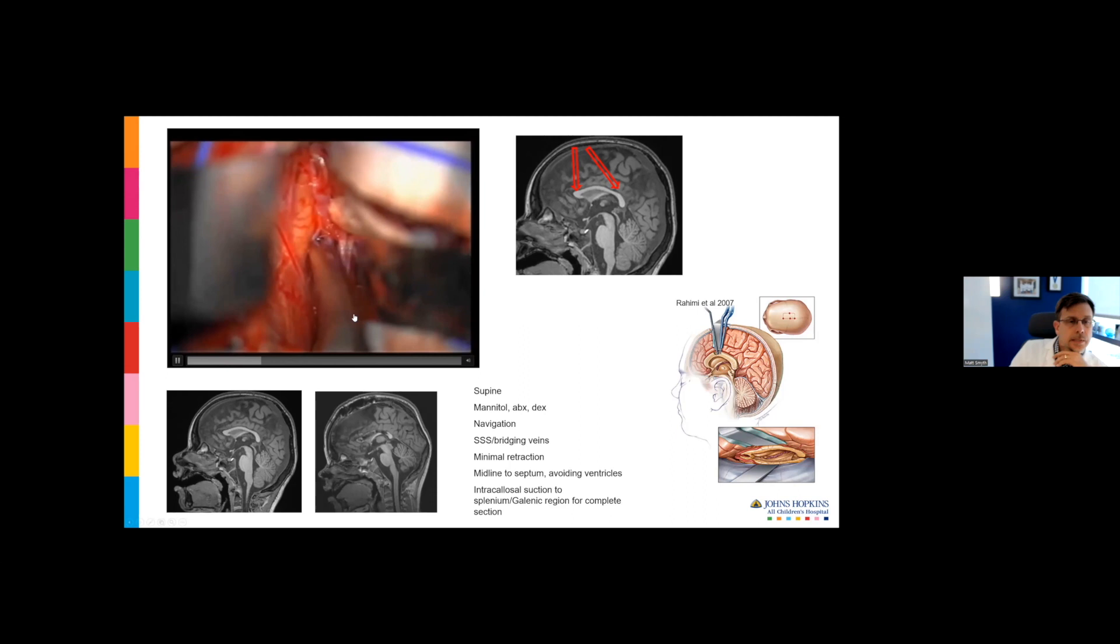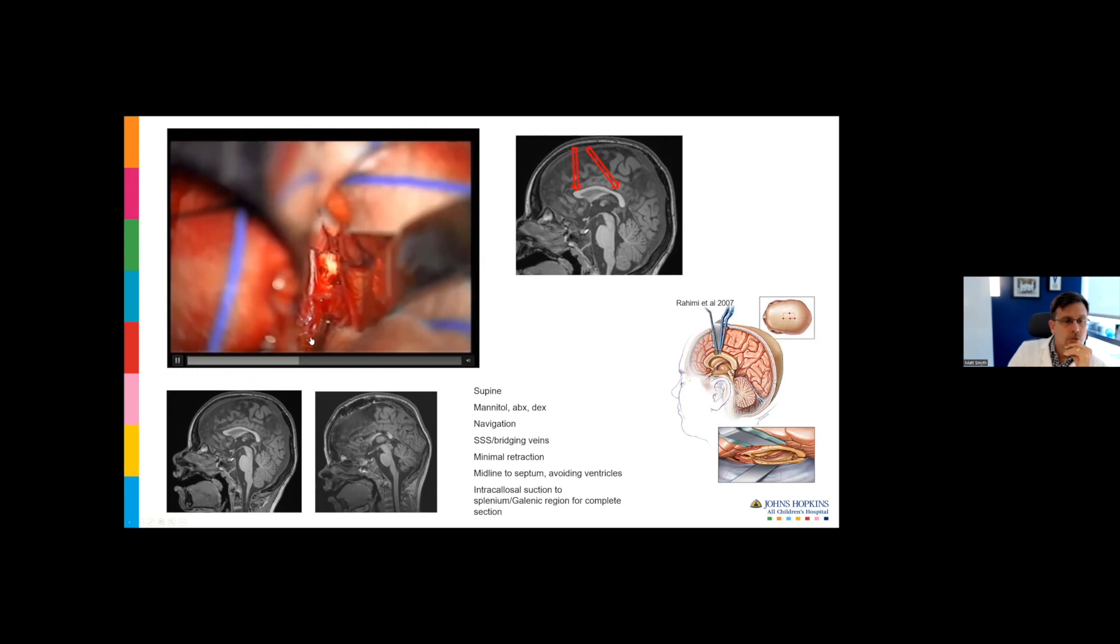Often the cinguli are stuck together, and you need to dissect them apart. Here you can see the glistening white structure, the corpus callosum, the pericallosal arteries, and the callosal marginals. We're teasing them apart. This particular patient had a unique variation of anatomy where there was an accessory anterior communicating artery between the two callosal marginals.